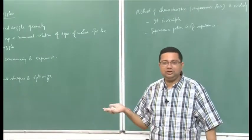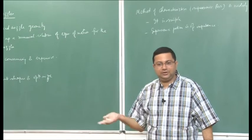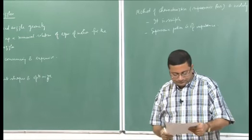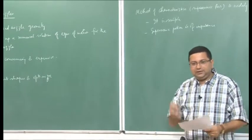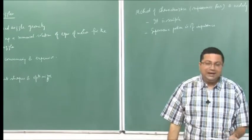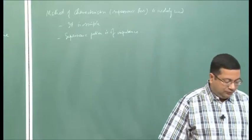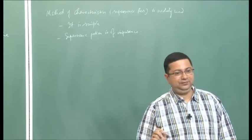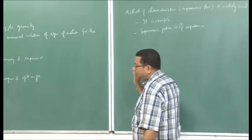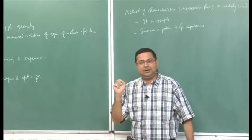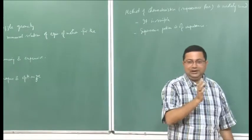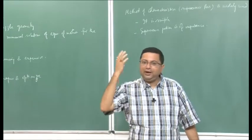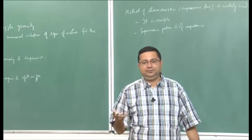The supersonic portion is the important part where we need to have the design. The method of characteristics will give us the initial shape. At present, the practice is to get the initial shape from the method of characteristics, then do the full analysis and check the validity of the initial design. That is a much cheaper approach and gives us a much better solution. Now we will focus on the method of characteristics. The method of characteristics depends on the fact that in supersonic flow, the influence of a small pressure difference is limited to a specific region.